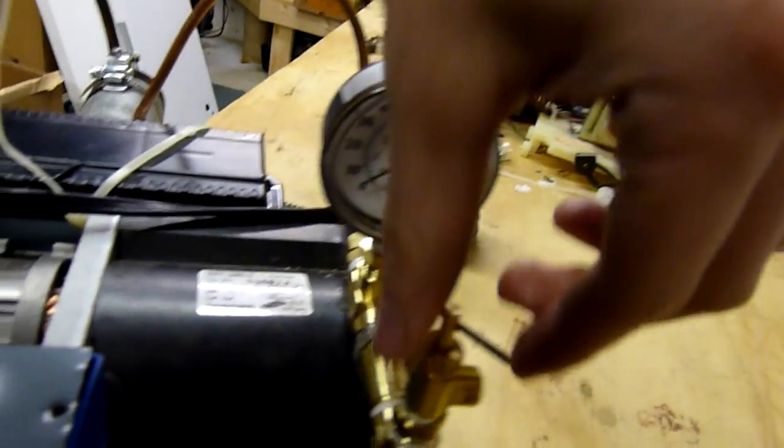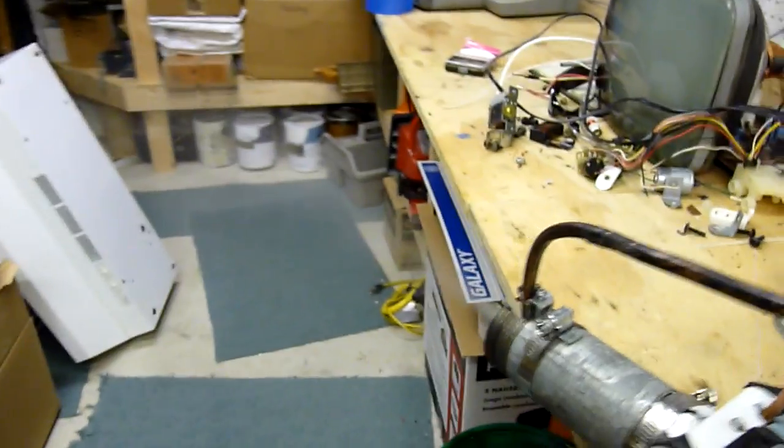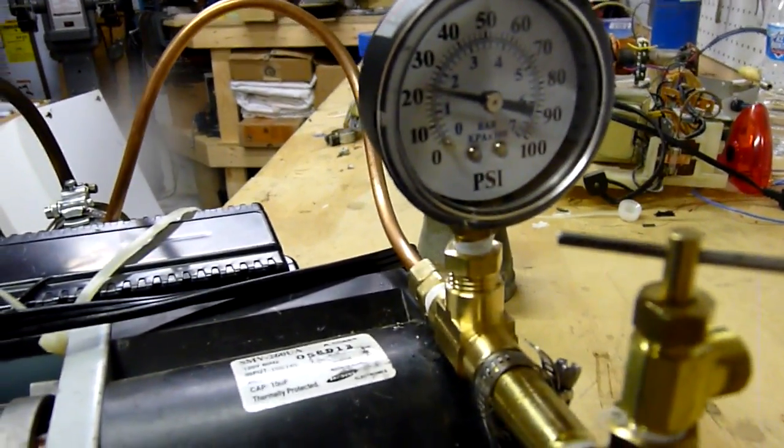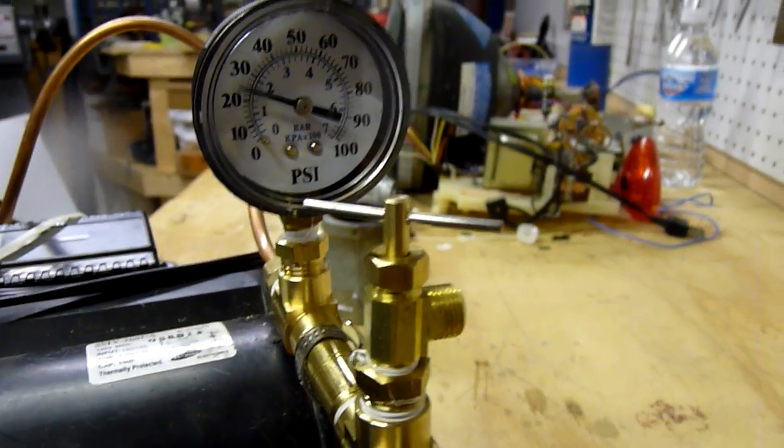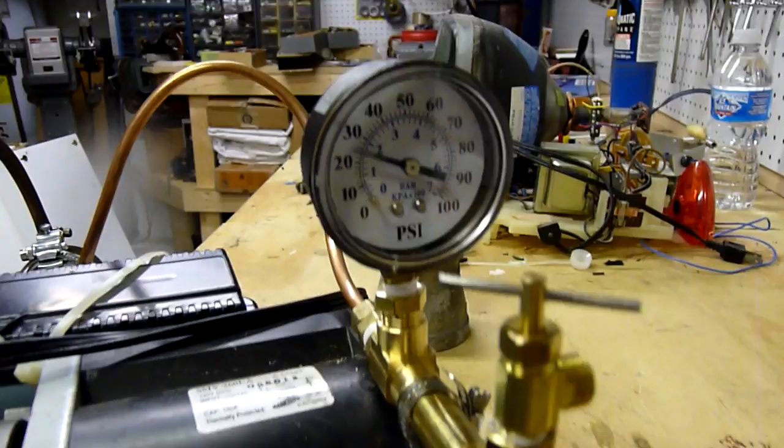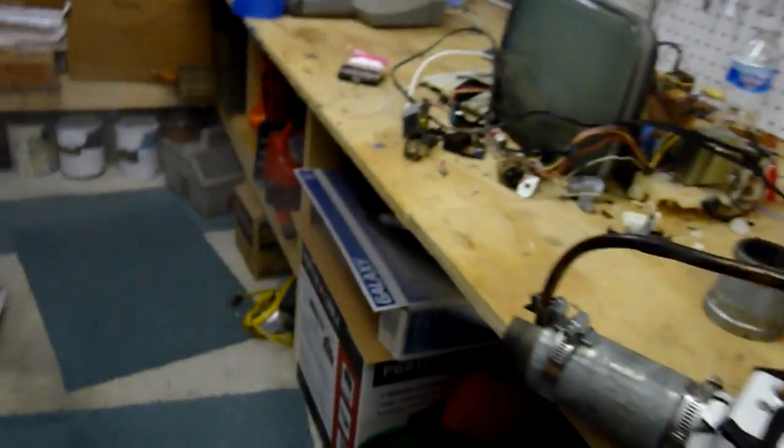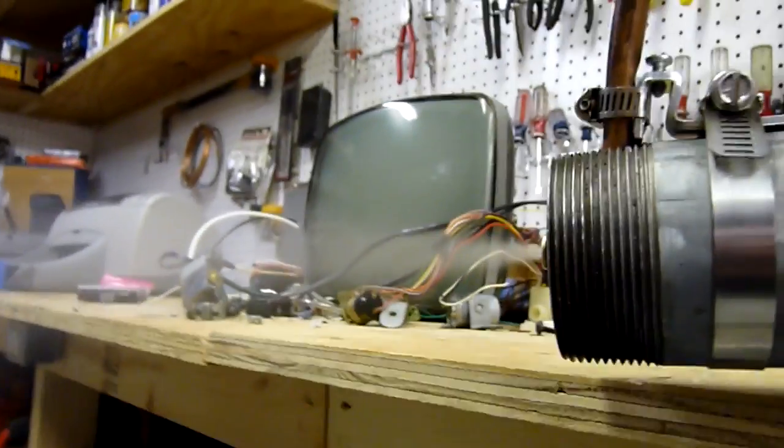So, let's start closing the valve, see pressure's building, and there we go. And we're climbing, we're running about 23, 24 PSI. You can see the fuel line, drawing from this bucket. And there's the stream.